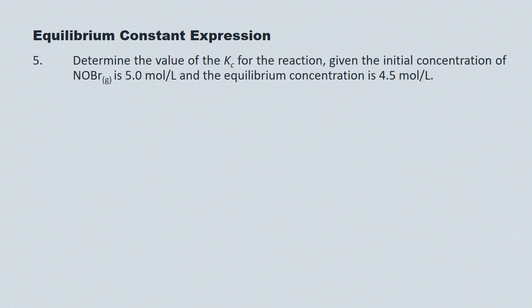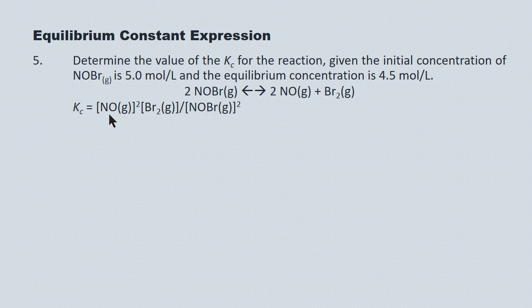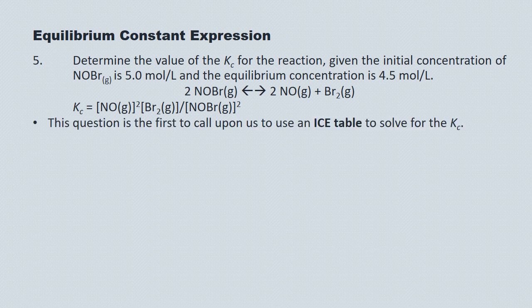Now we'll do a couple of mathematical problems and introduce both shortcuts. Determine the value of Kc for the reaction given the initial concentration of NOBr is 5.0 mol/L and the equilibrium concentration is 4.5 mol/L. The Kc expression equals the concentration of NO squared times the concentration of Br2 divided by the concentration of NOBr squared. This question calls upon us to use an ICE table to solve for Kc.